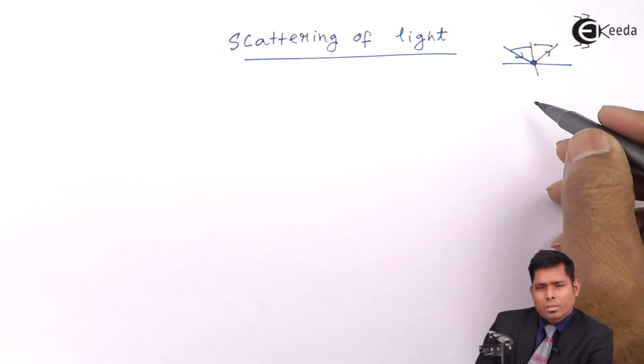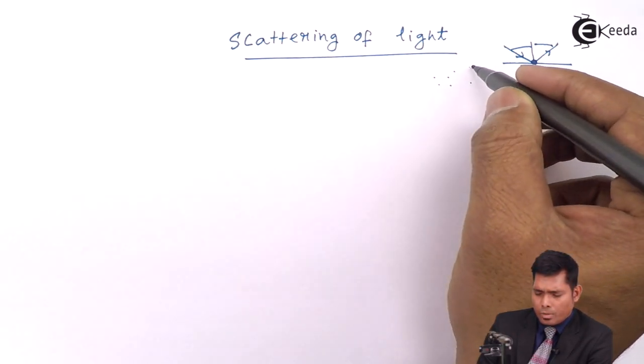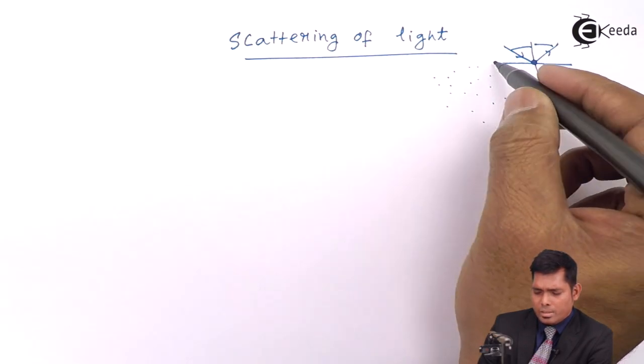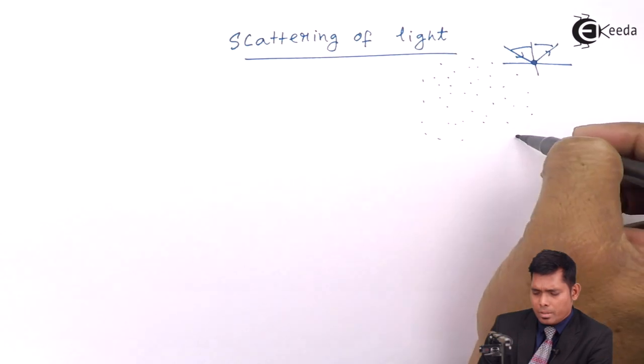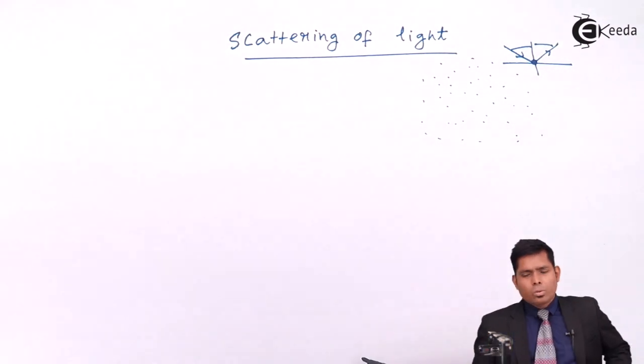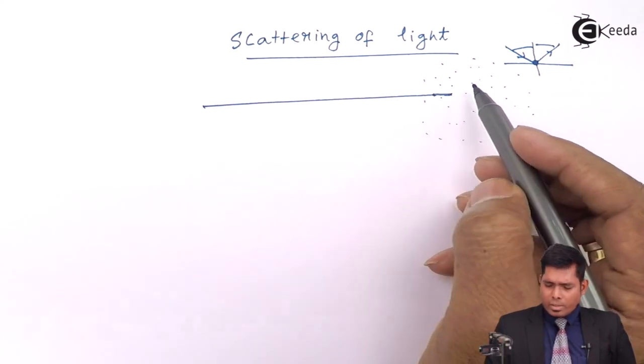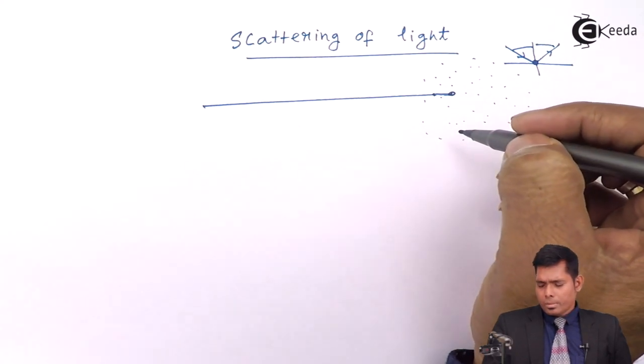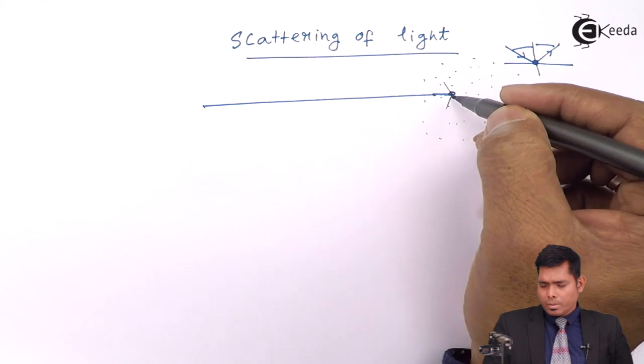But in case of scattering, the direction is not fixed because in the atmosphere it consists of water droplets, few gases, dust particles, and many things. When light enters and strikes the dust particles, then it scatters the light in all possible directions.